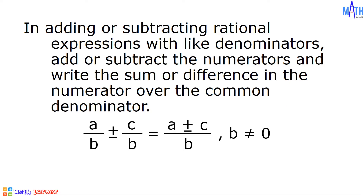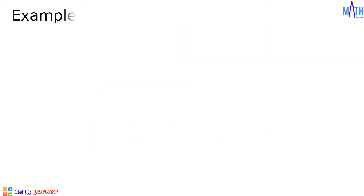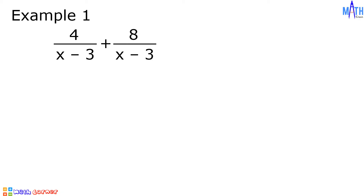Let us begin adding or subtracting rational expressions. Example number 1: 4 over x minus 3 plus 8 over x minus 3. Let us add the numerators. 4 plus 8 is equal to 12.